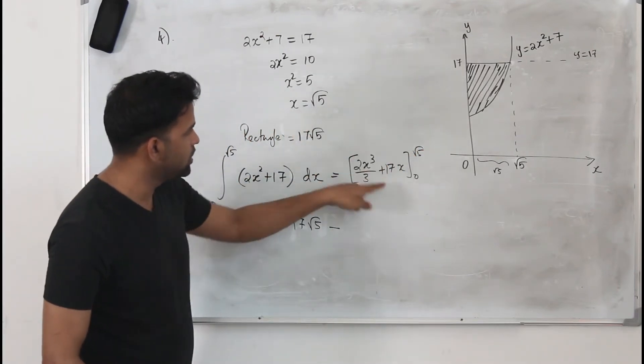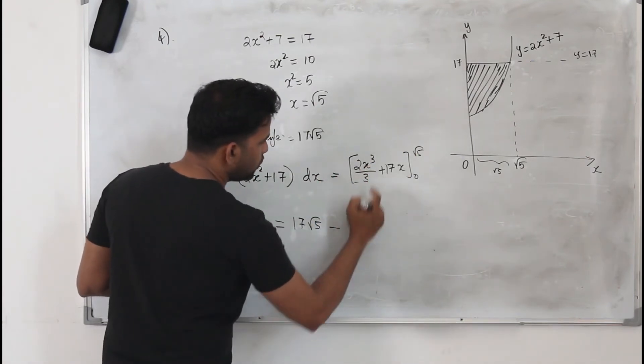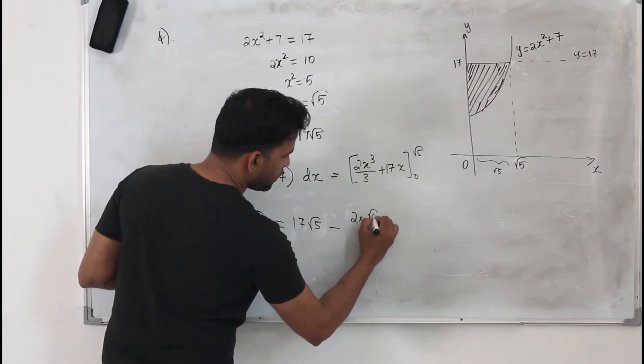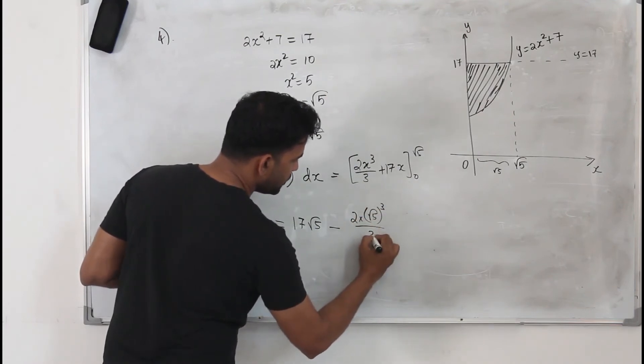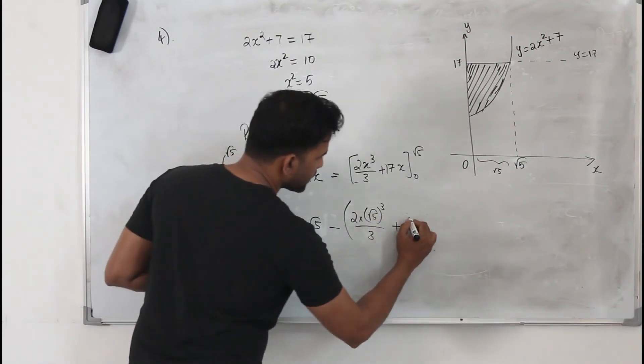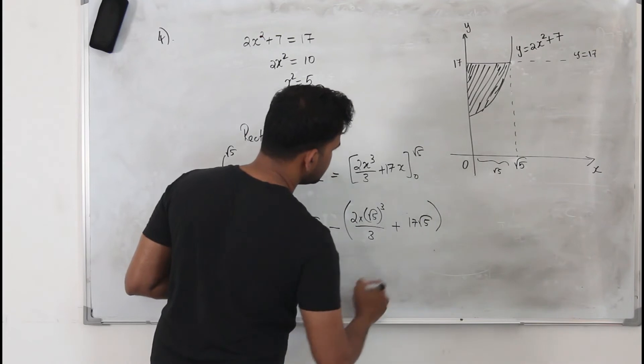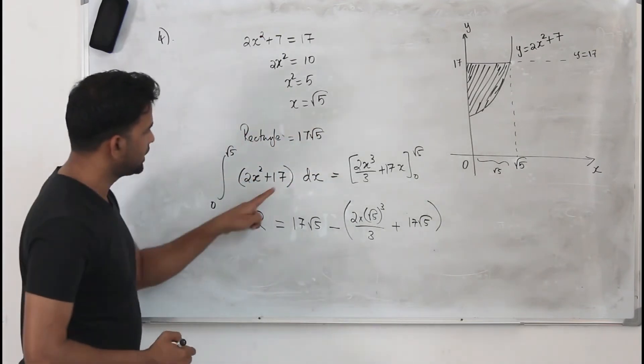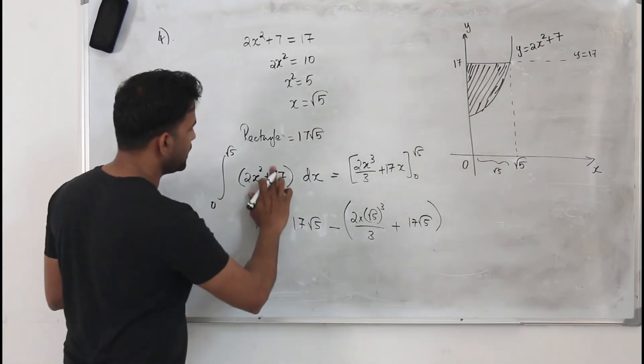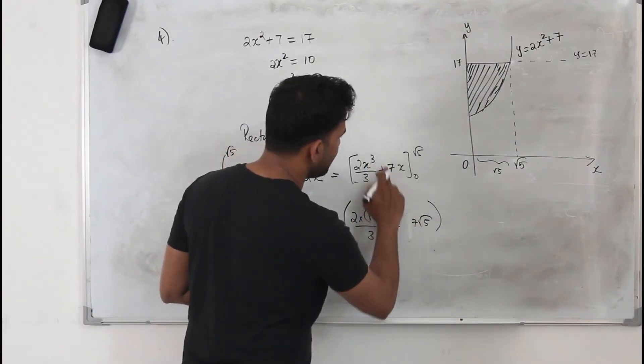x limit 0 to square root of 5. When you substitute 0, everything will be 0. Square root of 5 will be 2 times square root of 5 cubed by 3 plus 17 square root of 5. Wait, 17, it's 7 sorry, not 17, it's 7. The function is 7, so 7 root of 5.